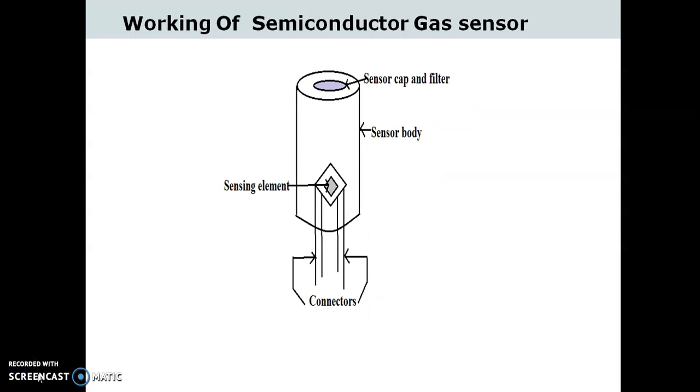Let us understand the working of semiconductor gas sensor now. When the gas is allowed to enter the sensor body, it is absorbed by the sensing element which changes its resistance. The change in resistance is generally proportional to the gas concentration.